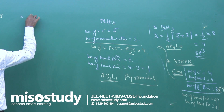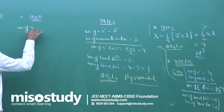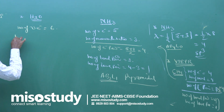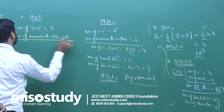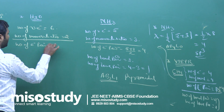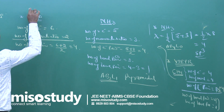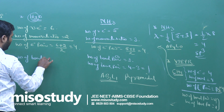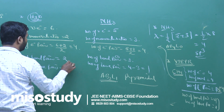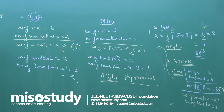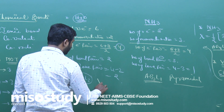The next one is H2O, water. Number of valence electrons = 6; number of monovalent atoms = 2. Number of electron pairs = (6 + 2) / 2 = 4. Number of bond pairs = 2; number of lone pairs = 4 − 2 = 2. So H2O has the formula AB2L2, and it will have a V shape.